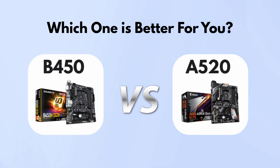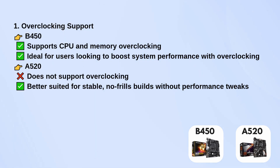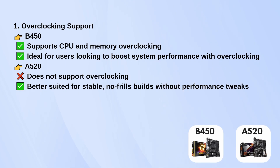Today, we're comparing two popular AMD motherboard chipsets, the B450 and the A520. Let's start with overclocking. The B450 supports CPU and memory overclocking, which makes it a great option for anyone looking to get a little extra performance out of their system. On the other hand, the A520 doesn't support any overclocking, so it's better if you're looking for a stable, no-frills build where you don't plan on tweaking performance.